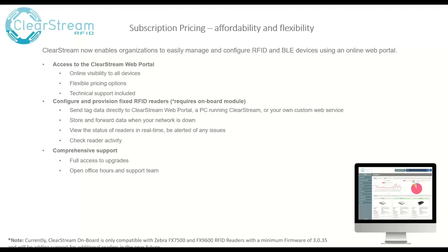In the past, you might have had to RDP to the machine running Clearstream to check on the health of the system. Also, if you were using the Clearstream Windows service, it was even trickier to see the status of your readers because it ran as a background application. You'd have to check event logs, look at the device itself, or build something using our API to show reader status. Now you can just log into the subscriptions portal and see all your devices, nicely labeled in green or red if there's an error.